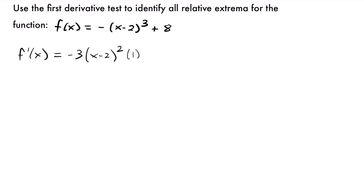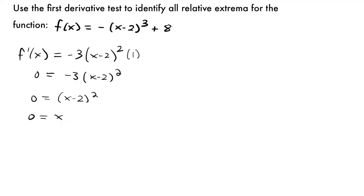If we set that derivative equal to 0, we'll have 0 equals negative 3 times x minus 2 squared. Dividing both sides by negative 3 gives 0 equals x minus 2 squared. Taking the square root of both sides gives 0 equals x minus 2, so x equals positive 2. That's the only critical value. I'll draw our number line and label the critical value of 2.